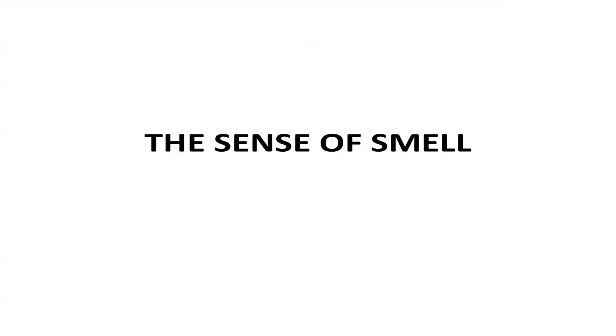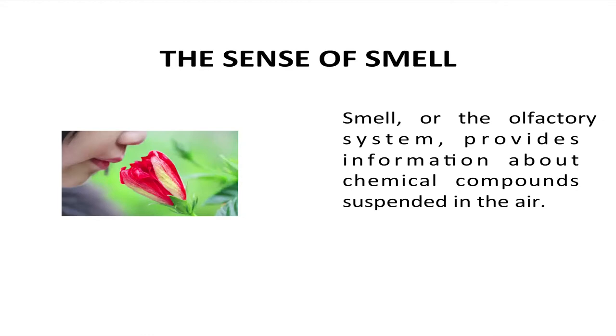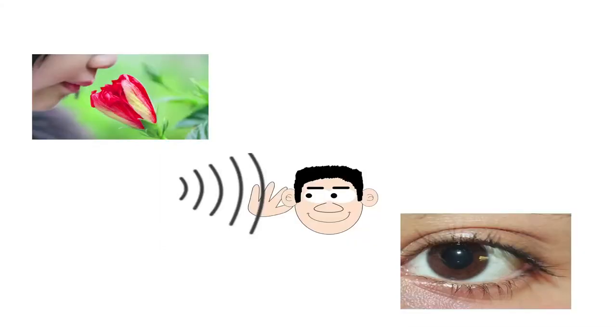Another sense is the sense of smell. Smell, or the olfactory system, provides information about chemical compounds suspended in the air. We have three main senses that respond to stimuli at a distance: smell, hearing, and vision. Smell is the most primitive of these three. Though smell is a minor sense in human beings, it greatly adds to our enjoyment of food and appreciation of perfumes and deodorants.